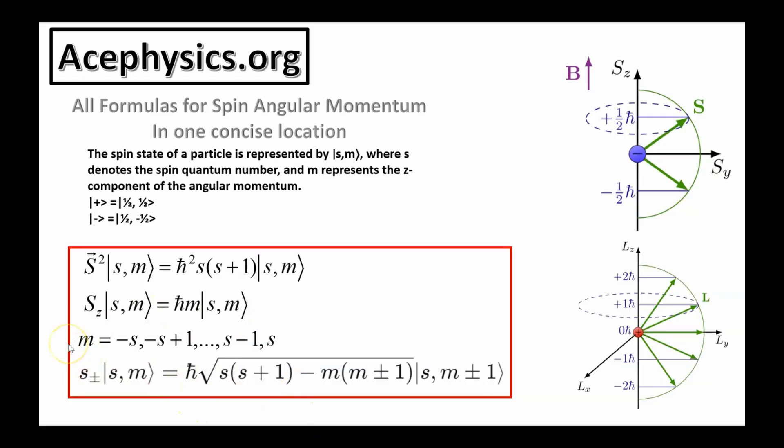The final equation on the bottom involves raising and lowering operators, s plus and s minus. These operators allow us to move the spin state between different m values. It's an experimental fact that the z component of angular momentum is quantized, meaning it can only take on discrete values. These operators are crucial in the mathematical framework that explains how spin states can transition from one m value to another. It's important to understand that this is all a mathematical framework to explain the relatively simple picture on the right.